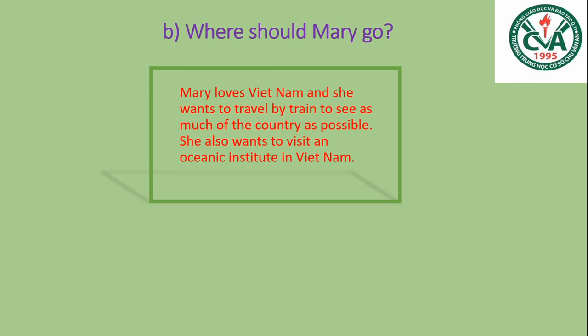Mary rất là thích Việt Nam và muốn đi du lịch bằng xe lửa để có thể biết nhiều về đất nước. Cô ta cũng muốn thăm Viện Hải Dương học ở Việt Nam. Như vậy ở đâu thì có Viện Hải Dương học? Đúng rồi - Nha Trang mới có Viện Hải Dương học. Như vậy chúng ta đề nghị cô ta đi Nha Trang.